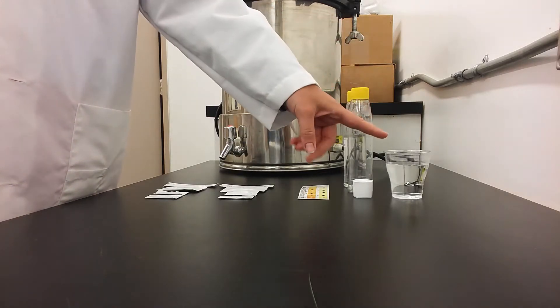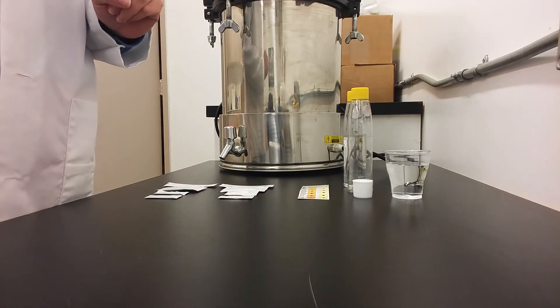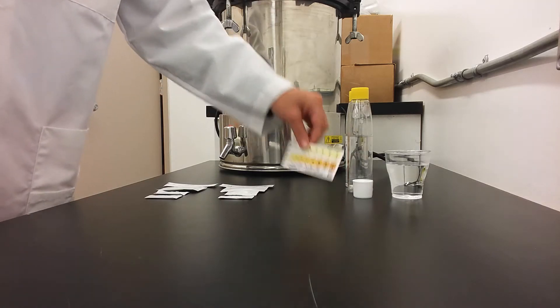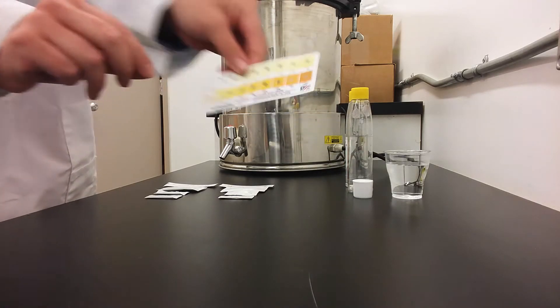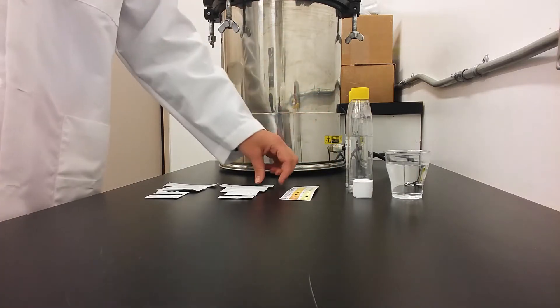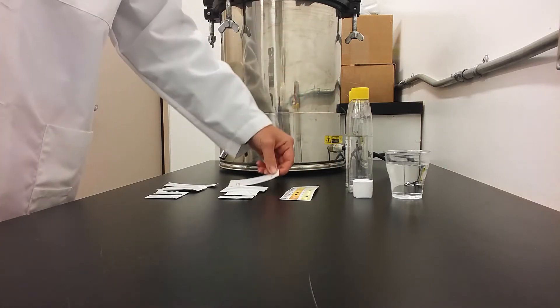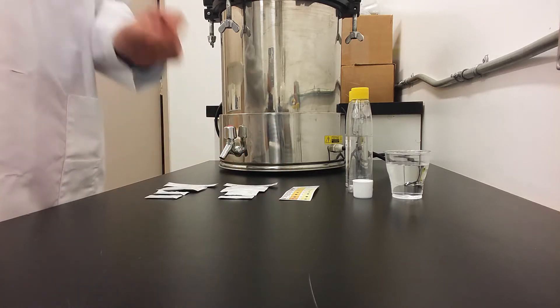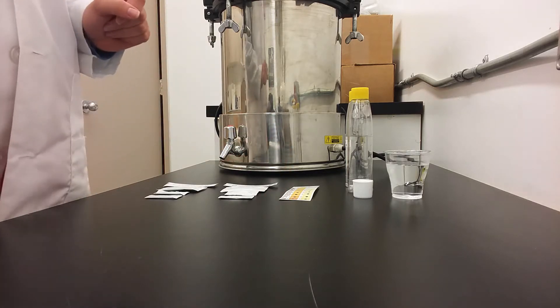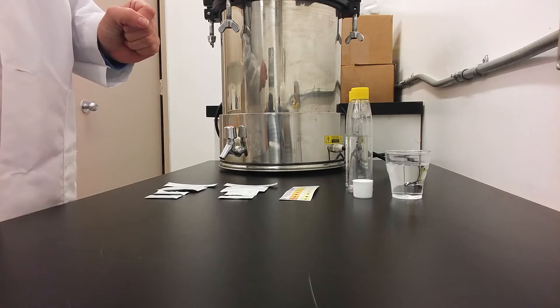You'll also need 100 milliliters of whichever type of water you'll be testing, the color indicator strip, two arsenic test strips, and the three different kinds of reagents that are included in the arsenic test kit package.